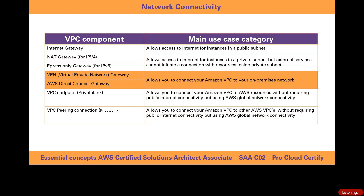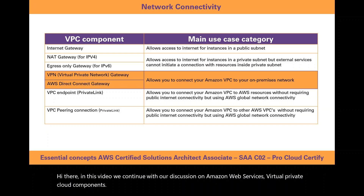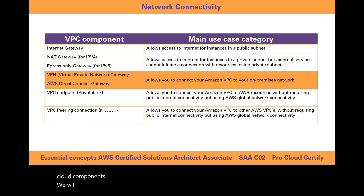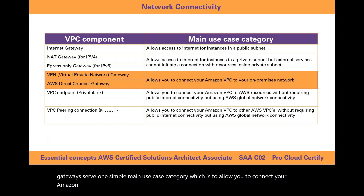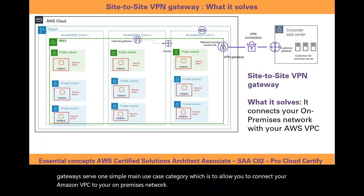In this video we continue with our discussion on Amazon Web Services Virtual Private Cloud components. We will go over what is a VPN gateway and what is the AWS Direct Connect gateway. Both these gateways serve one simple main use case category, which is to allow you to connect your Amazon VPC to your on-premises network.